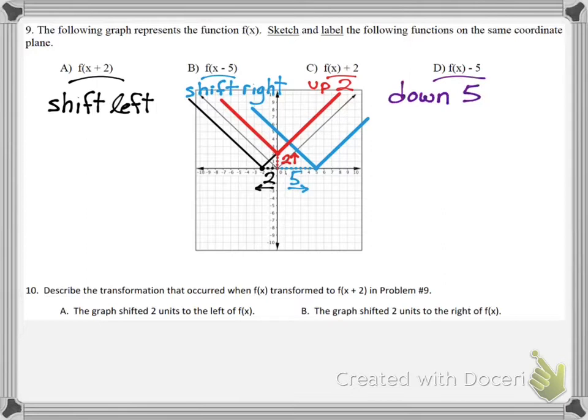Part D: F of x minus 5. You simply shift down 5 units. Actually I went down 6 units. Ah, whatever. You can get the point. It should have been a 5. There we go.